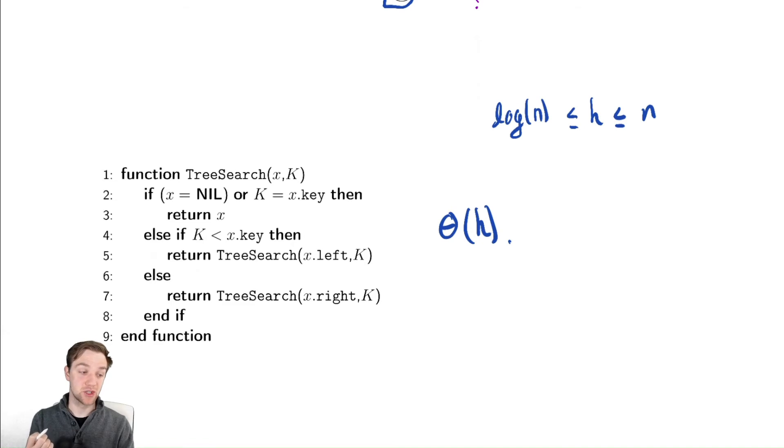We cannot reasonably decide what it is without knowing more. We may, for example, know that the tree is complete, like we saw in an earlier example, in which case we might know we are in the log of n territory. We might know it is very not complete, in which case we might be more in the n territory, and anything in between.